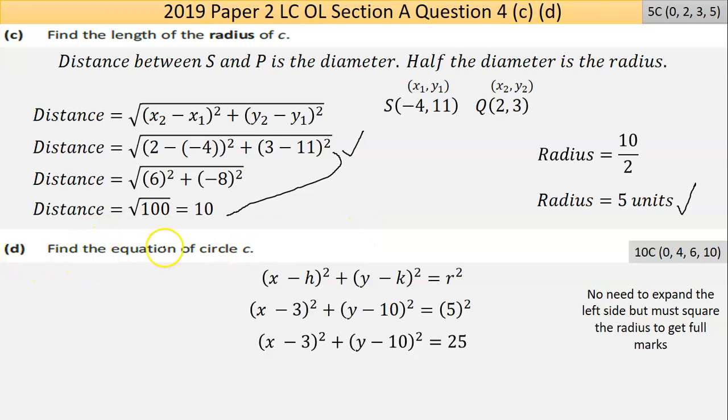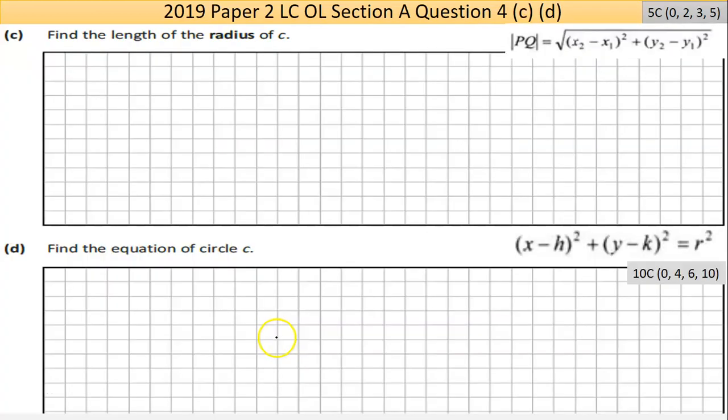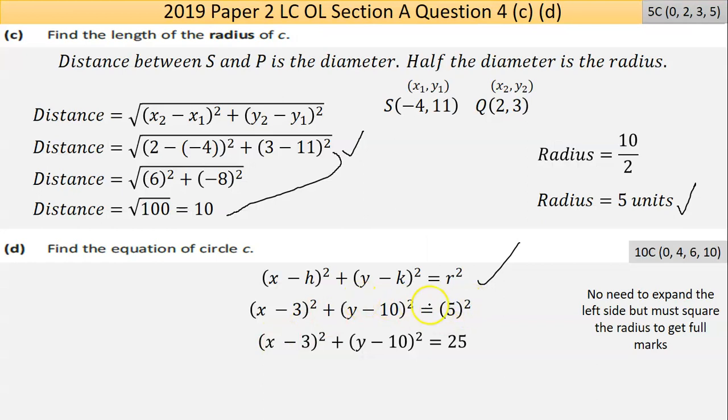So part D then says find the equation of the circle. Now the formula for the equation of the circle is given to you in the math tables. Here it is. Now, h and k stand for the center. So the center we identified earlier as (3,10). So that was literally back here. So I have the center. I have the radius. Yeah, I have everything I need to plug into the formula. So put it in and put it in. Now be careful if they were negative numbers. I would change the sign on them.